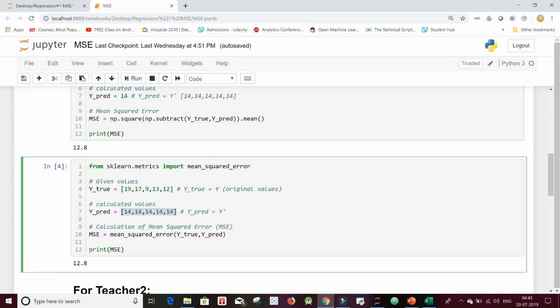So scikit-learn doesn't support broadcasting, so keep in mind you have to explicitly form a list of these predicted values, that is 14, and match it with the same shape of the list above. And simply you have to declare a variable MSE and use this mean_squared_error function.